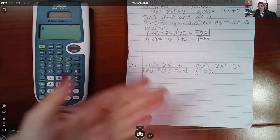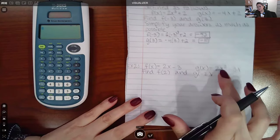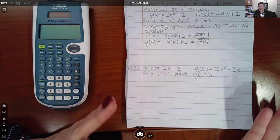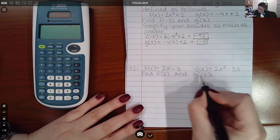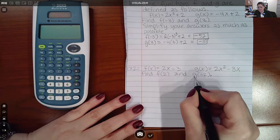Similarly, notice that they switched, right? This one's now the linear, and this one's the one that has the square or the cube. And so it's no different. Just make sure that you're plugging the 2 into the correct function, and you're plugging the negative 2 into the correct function.